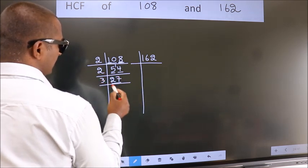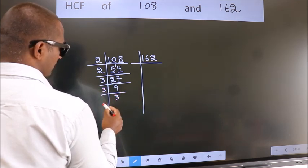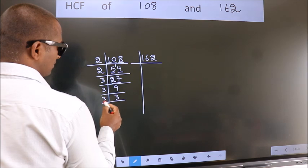27 is 3 nines 27. 9 is 3 threes 9. 3 is a prime number, so 3 ones 3.